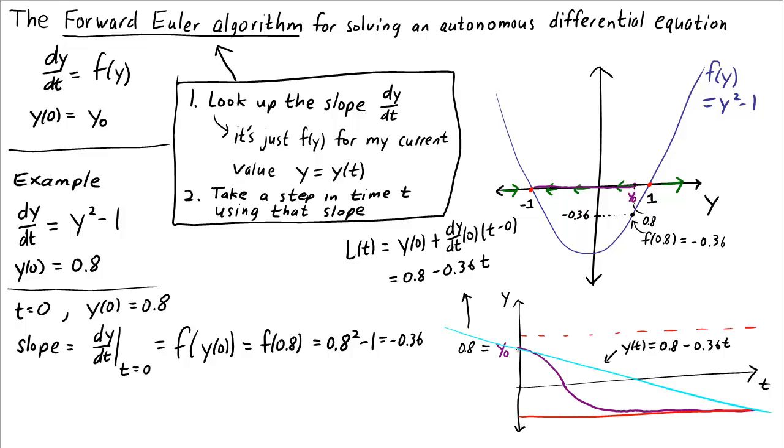If the slope never changed, we could continue to move along this line. And that would well describe the function y(t). But what happens as y decreases? As y decreases from 0.8, the function f(y) becomes more negative. Therefore, the slope becomes steeper than negative 0.36. And so if I continue on this line, I'll miss the fact that the graph of y(t) should get steeper. If I want to achieve a good approximation of the function y(t), I shouldn't take too big of a step along this line before I make a course correction and look up a new slope and maybe go along a different line.